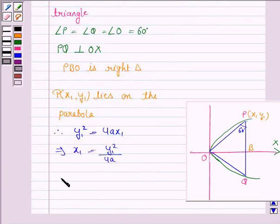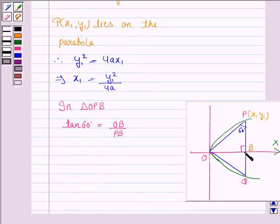Now, considering the triangle POB or OPB is a right triangle, right angled at B and angle P is 60 degrees. So, tan 60 degrees is equal to perpendicular upon base, that is OB upon PB. Now, OB is x1 and PB is y1. So, tan 60 degrees is equal to x1 upon y1.